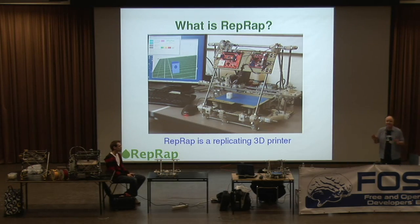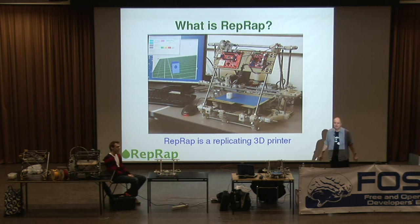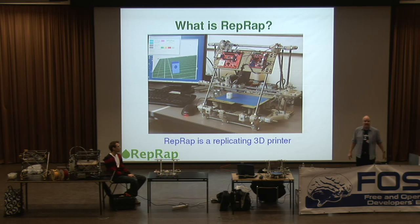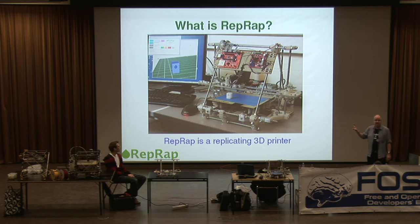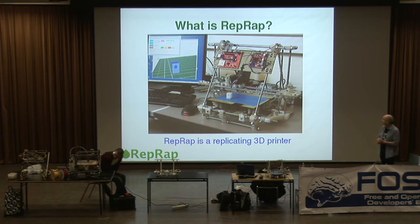Many of you know what the machine is, but just for some of you who don't: RepRap is a 3D printer. It's a machine that makes three-dimensional objects in plastic from a description on the computer, completely automatically. But the key thing about RepRap is that it's a replicating 3D printer — it's been designed so that it can print its own parts. Not all of its own parts, as we shall see in a moment, but a significant quantity of its own parts.